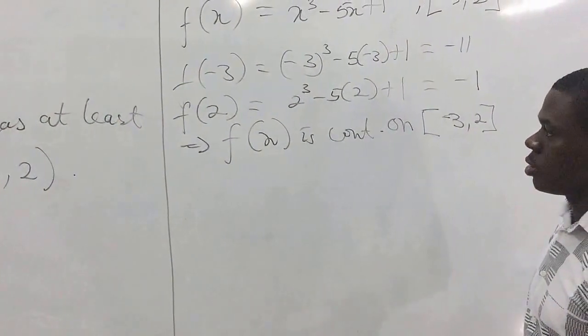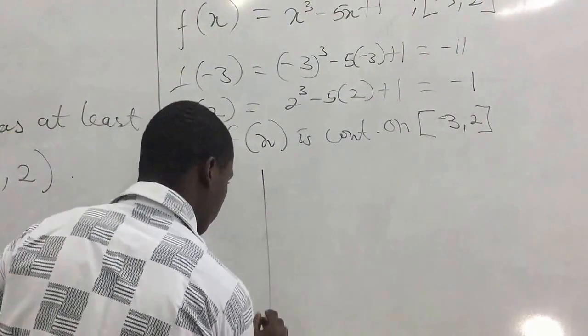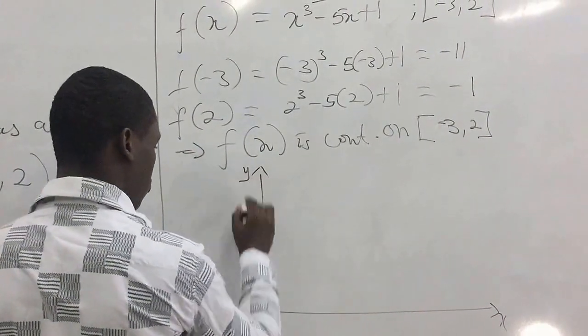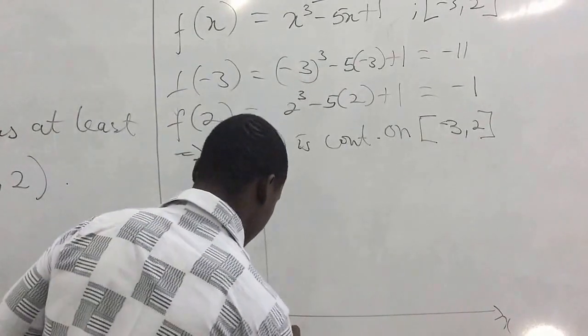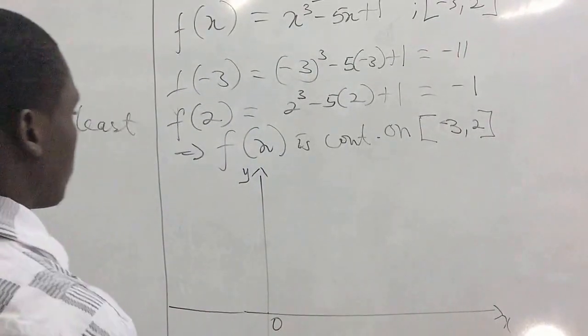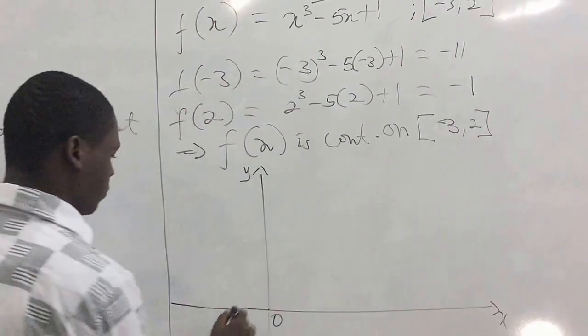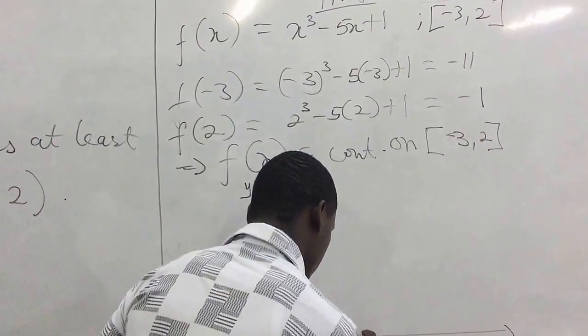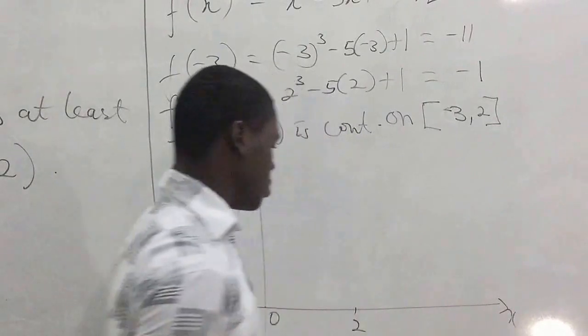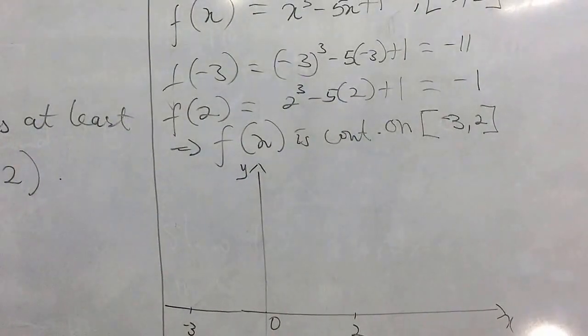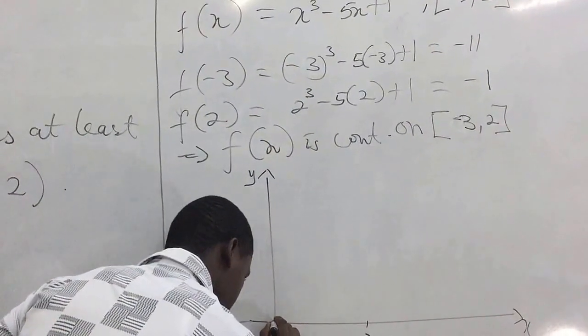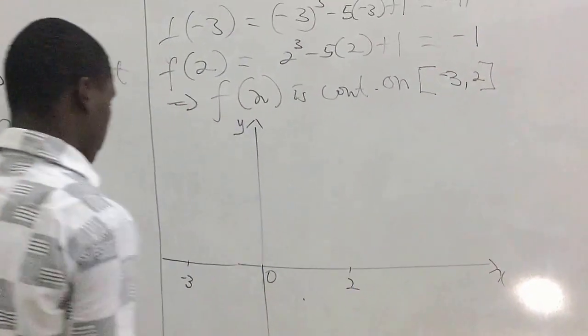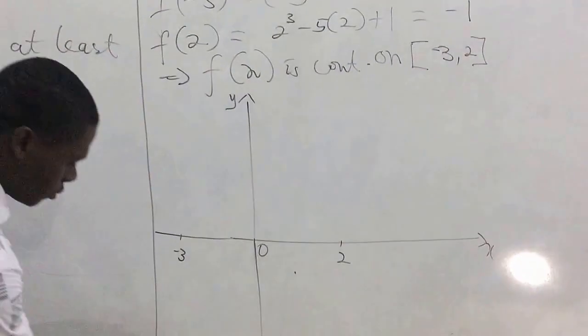So we have the x and y axes. In the graph, what values do we have? We have -3, and at -3 we are getting -11, so we'll get something here.